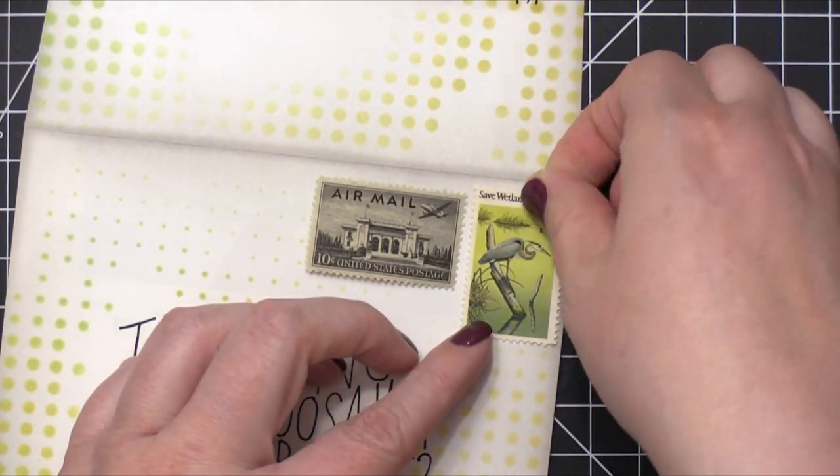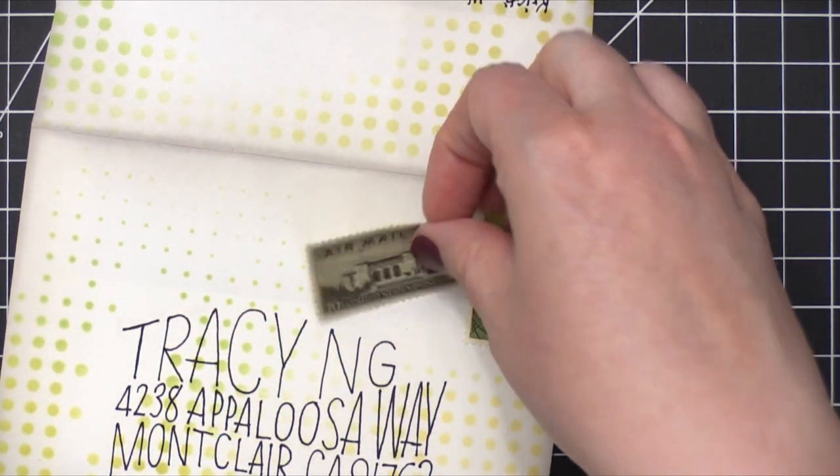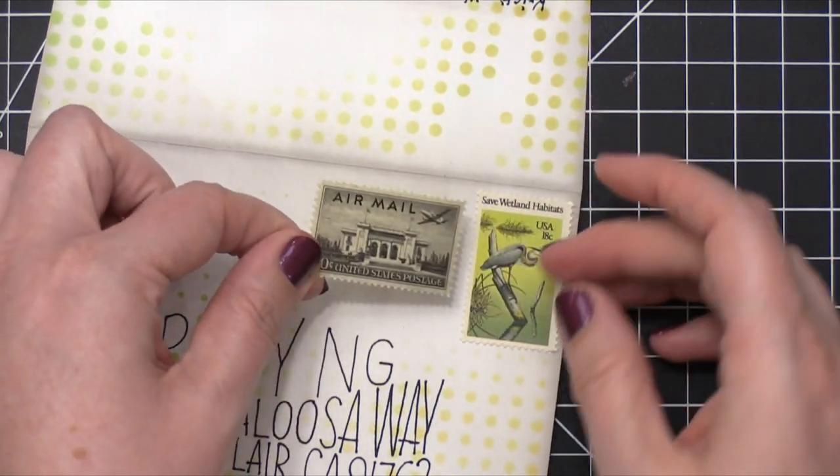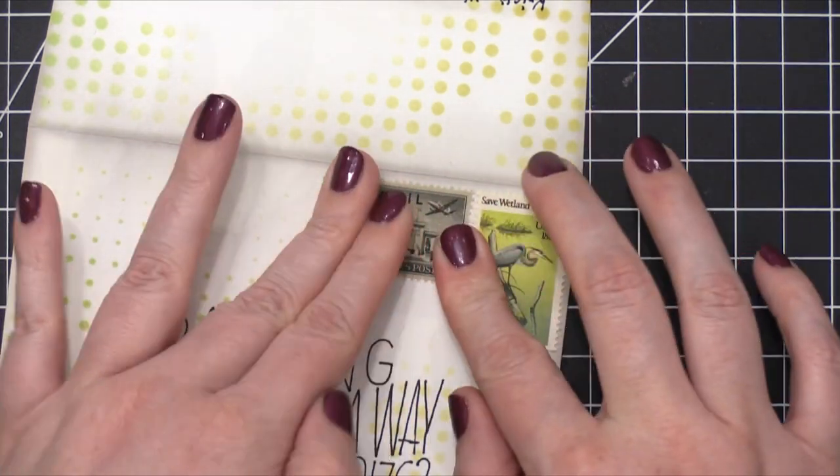I added some postage stamps to that top corner, and I wanted to use postage stamps that really reflected the ink choices. So I have kind of like a lime green shade on this first postage stamp. I have a black and white.